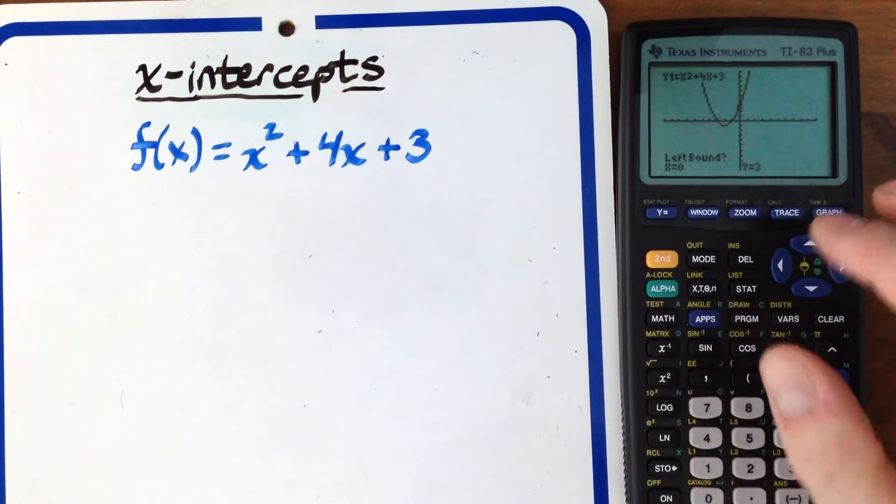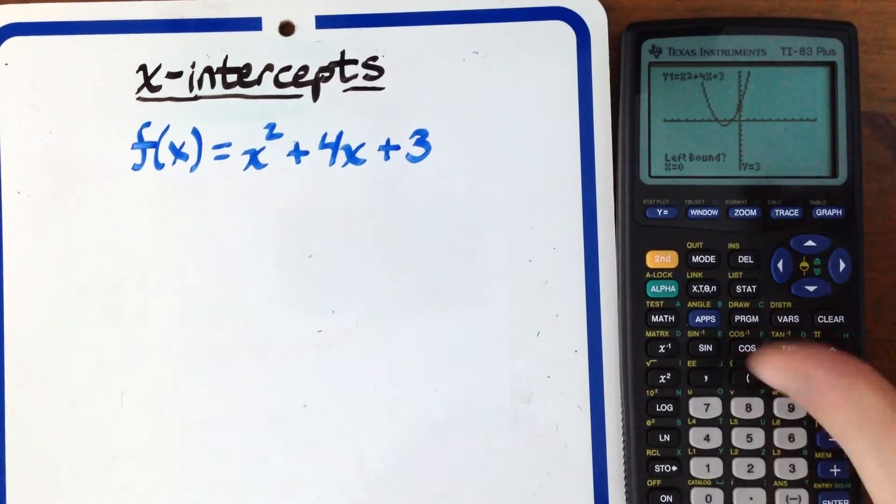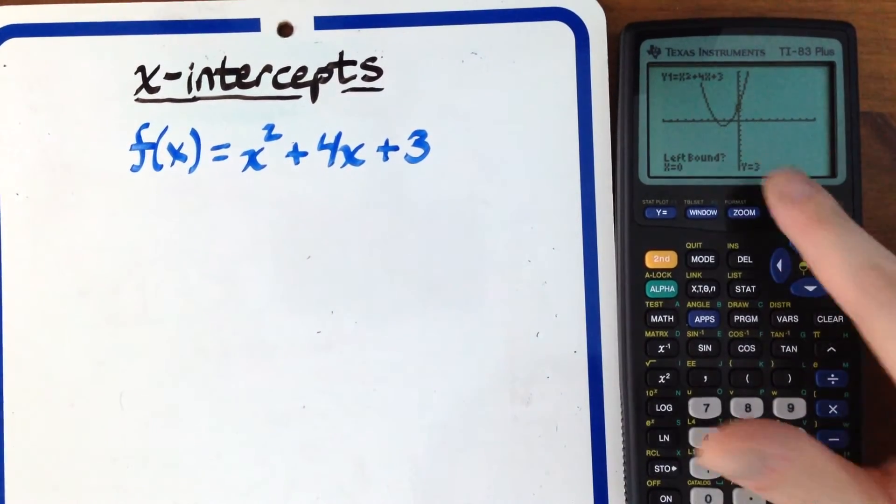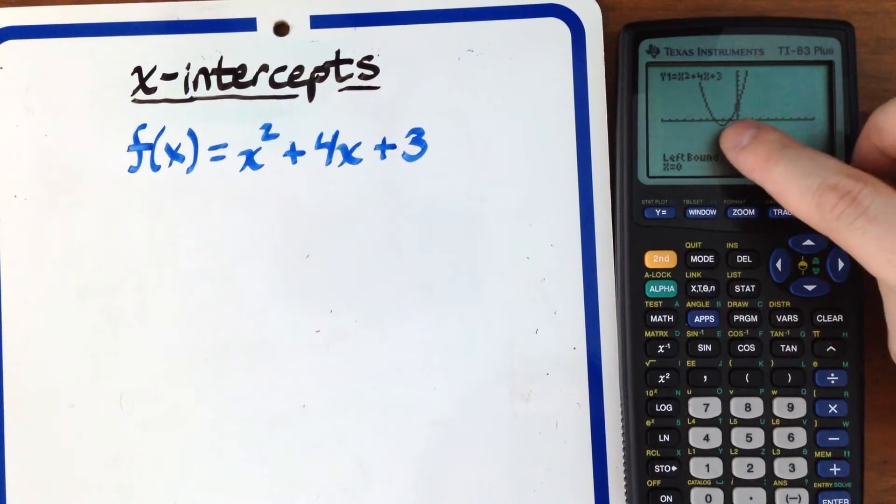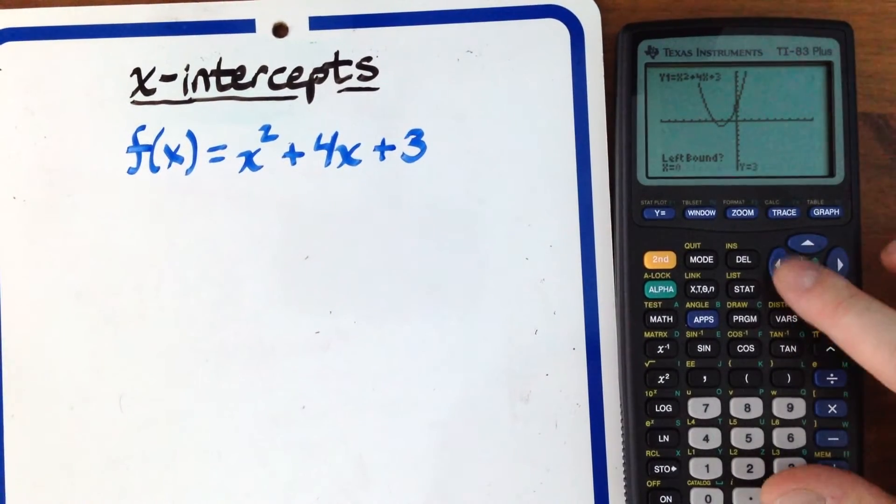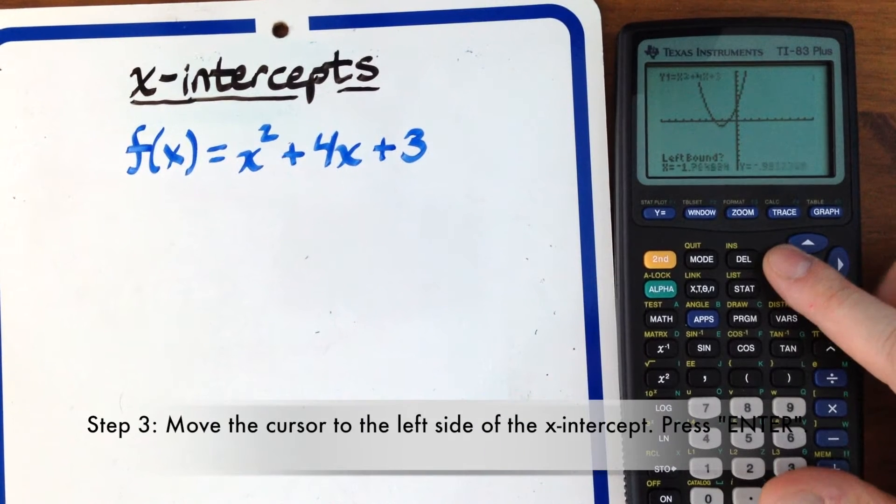It will say left bound. This means you want the left side of wherever the zero is. In this case, our zeros are right here and here, intersecting the x-axis. I'll do the one on the left first.